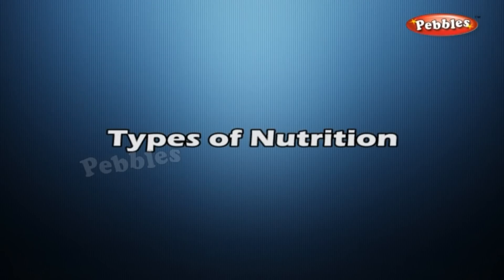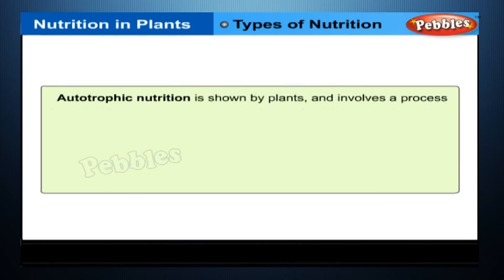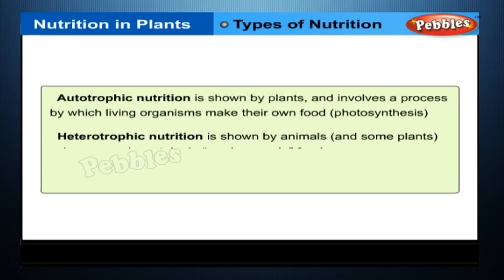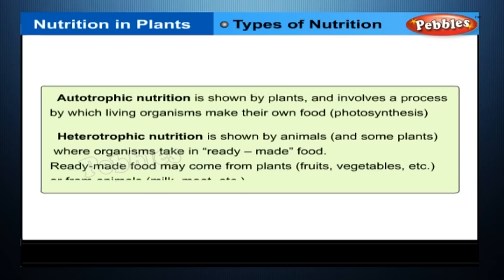Types of Nutrition. Autotrophic nutrition is shown by plants and involves a process by which living organisms make their own food — photosynthesis. Heterotrophic nutrition is shown by animals and some plants, where organisms take in ready-made food. Ready-made food may come from plants — fruits, vegetables, etc. — or from animals — milk, meat, etc.